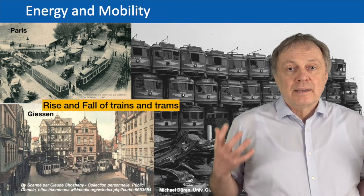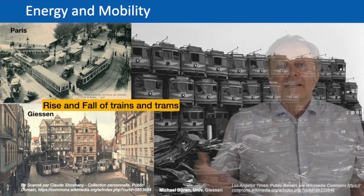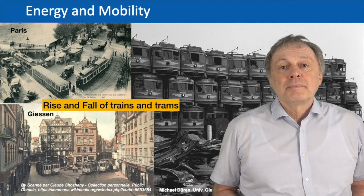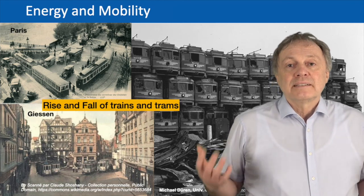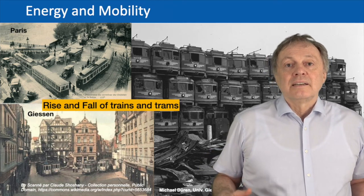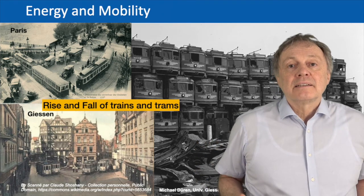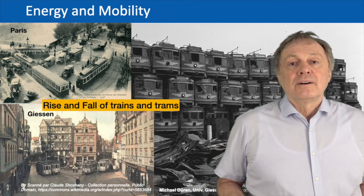Only when cars became common did most trams disappear. This was partly pushed by the automobile industry, because trams were a showstopper — people could travel much more simply and cheaply with trams in big towns. Some companies bought all the tram companies and then destroyed the trams, forcing people to use their own cars. Especially in most American towns, people had no choice but to own a car.